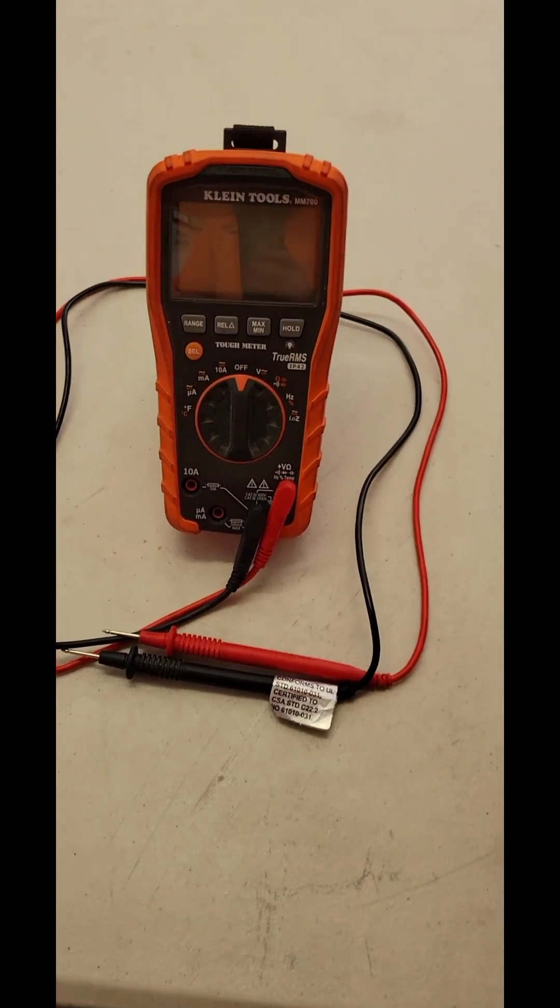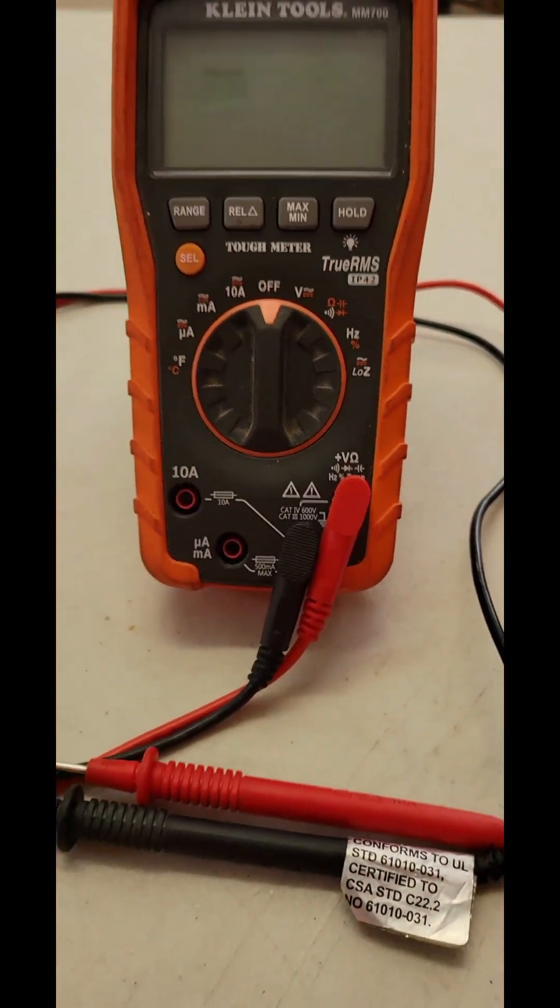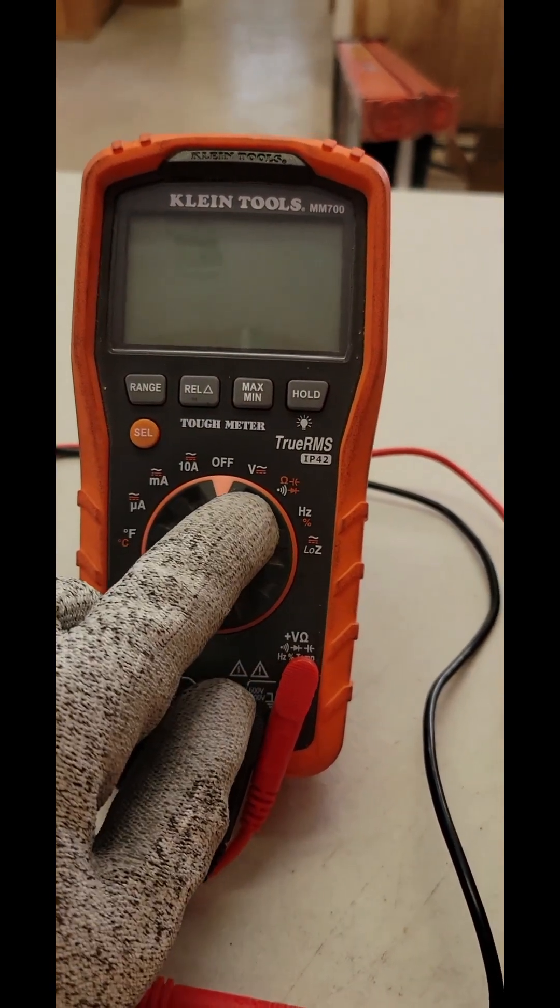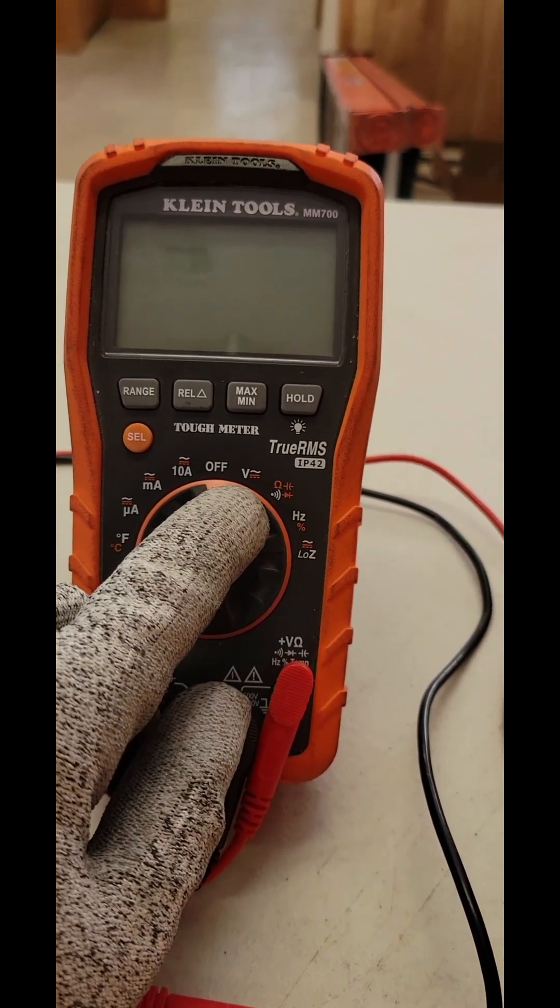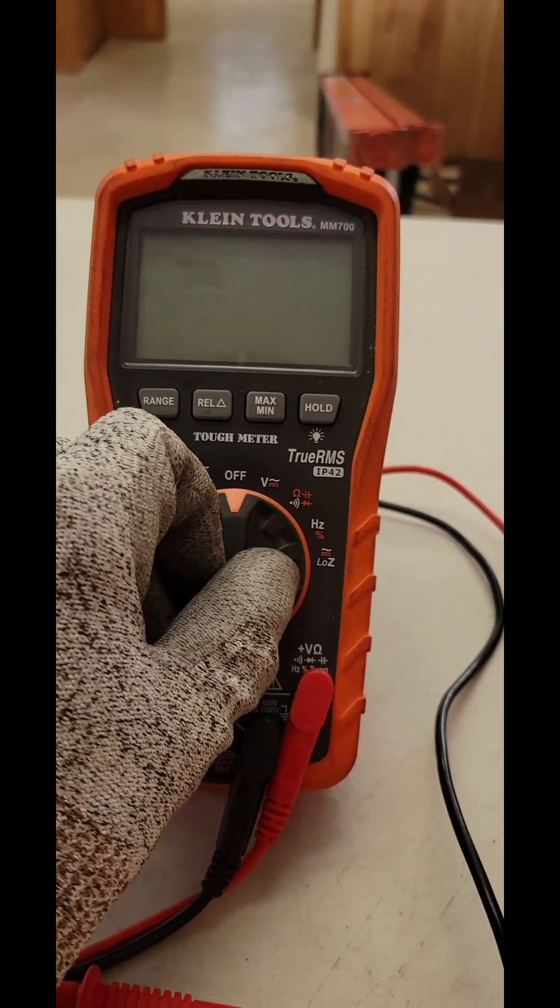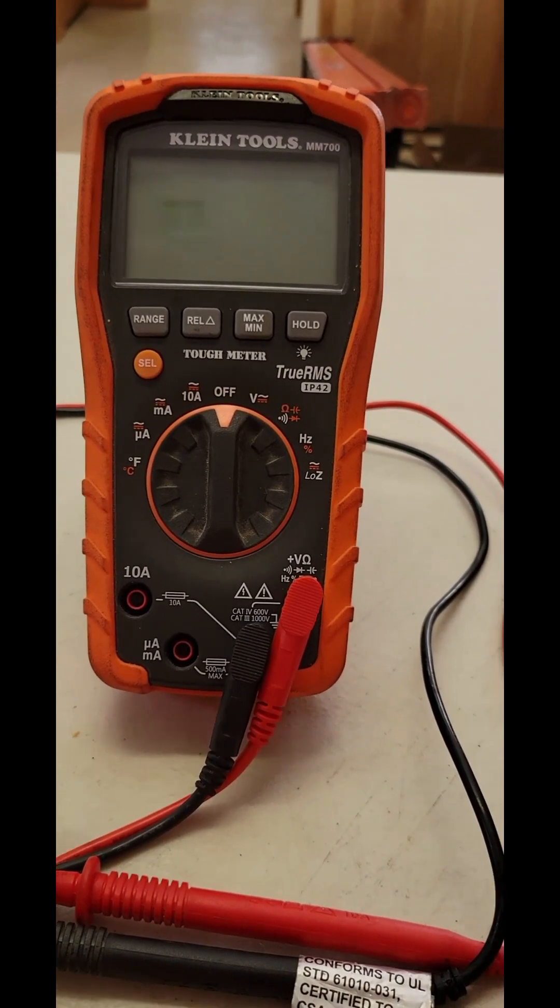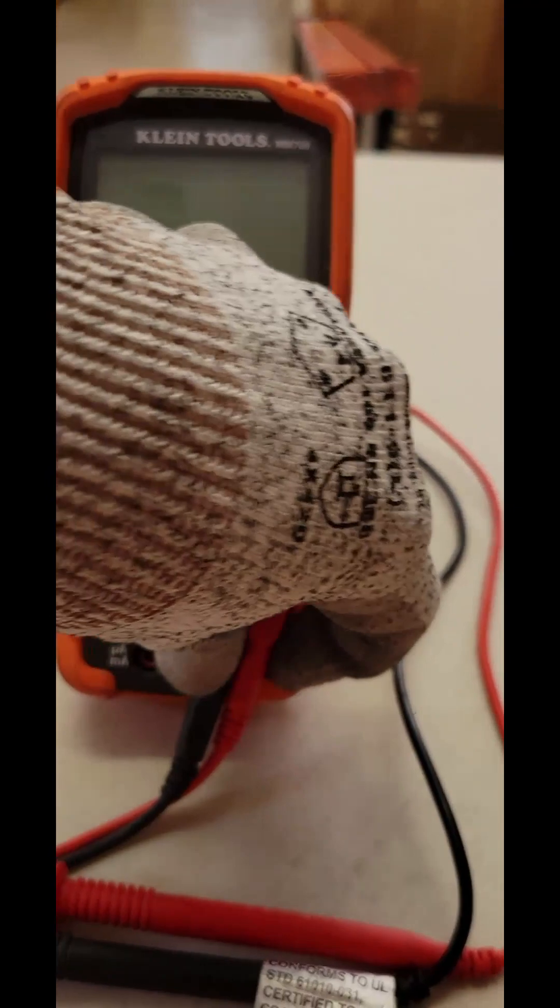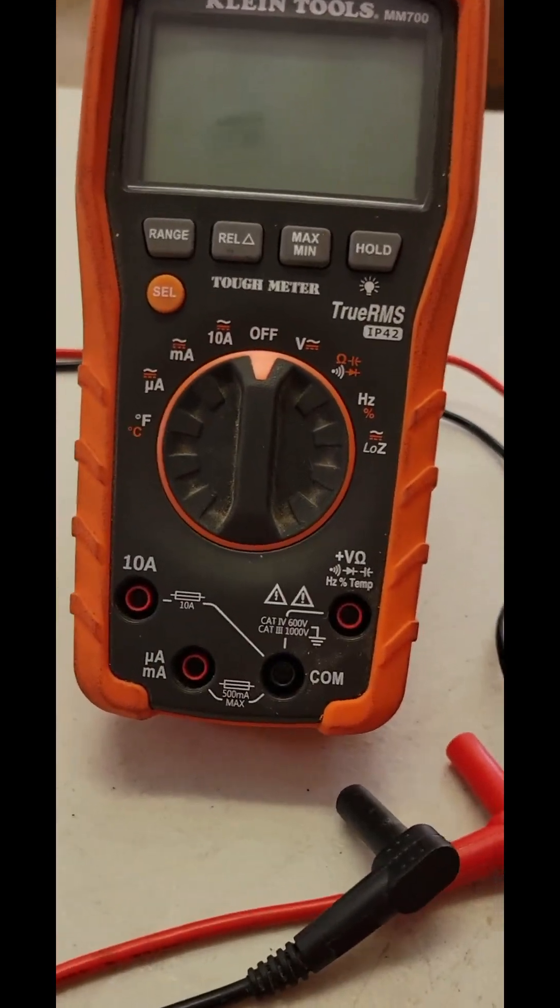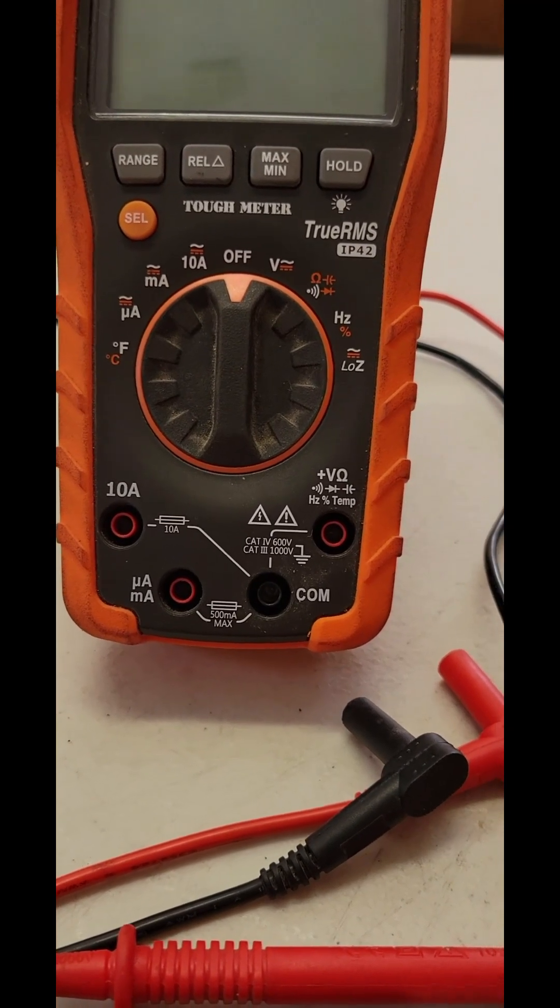The first thing you're normally going to use is voltage. This symbol right here, the V, is your voltage testing. Before you do your voltage test, you're going to want to make sure that your leads are in the correct holes. We'll take these out here and show you the black hole on the bottom is always going to be your common.